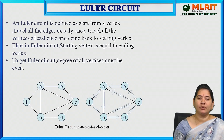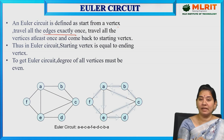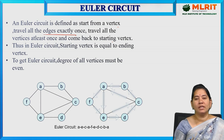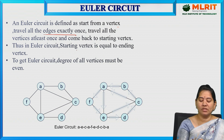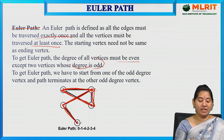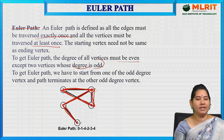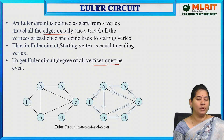Next, we have the Euler circuit. An Euler circuit is defined as starting from a vertex, traveling all edges exactly once, traveling all vertices at least once, and coming back to the starting point. The difference from Euler path is that in Euler circuit the starting vertex must equal the ending vertex. To get an Euler circuit, the degree of all vertices must be even.